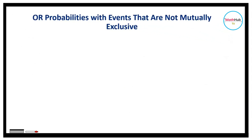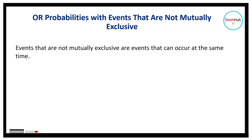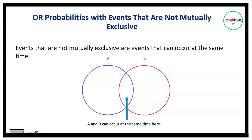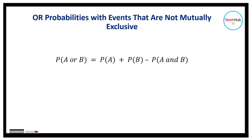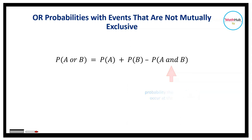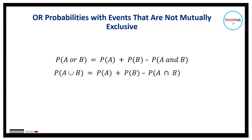Next, we will consider events that are not mutually exclusive — events that can occur at the same time or simultaneously. For probabilities with events that are not mutually exclusive, we compute the probability by adding the individual probabilities and then subtracting the probability that A and B occur simultaneously. So the probability of A or B is equal to P(A) plus P(B) minus P(A and B). Using set notation, P(A union B) equals P(A) plus P(B) minus P(A intersection B).